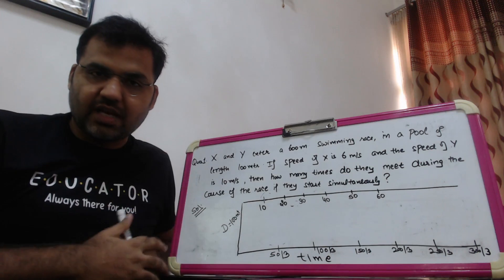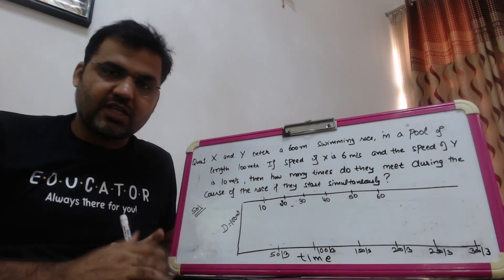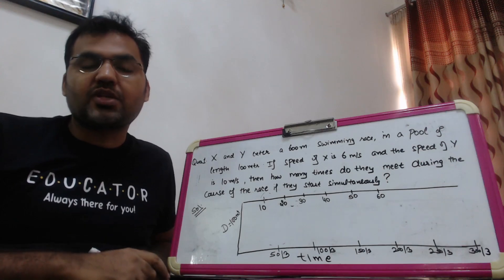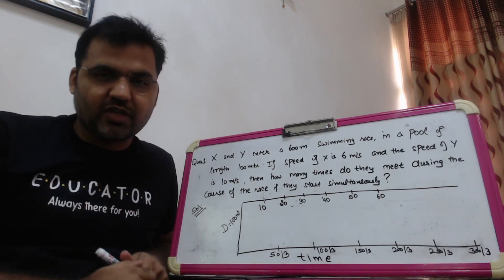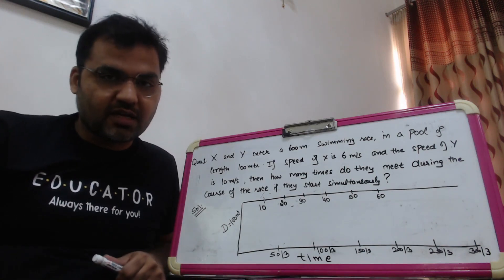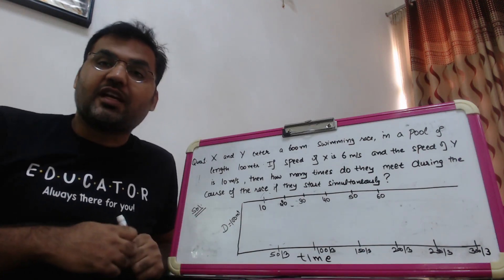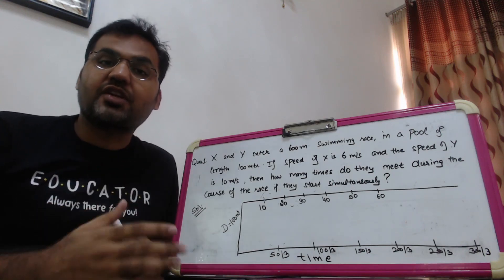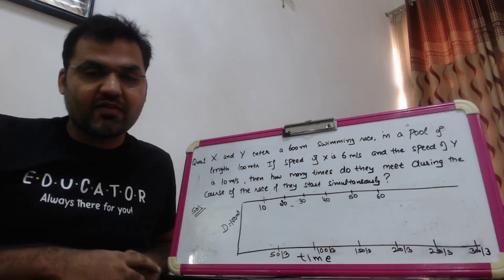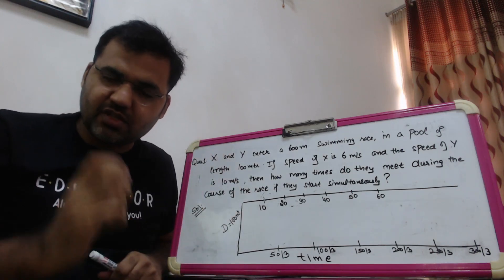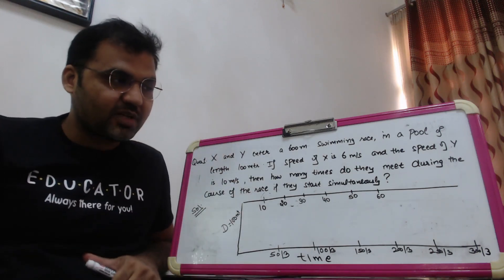Speed of X is 6 meter per second, speed of Y is 10 meter per second. How many times do they meet during the course of the race if they start simultaneously? When the race starts from the same point simultaneously, until the race finishes, how many meeting points will there be? With the equation method, there are high chances of error. Students make mistakes - whether they're moving in the same direction, opposite direction, will they meet or not.